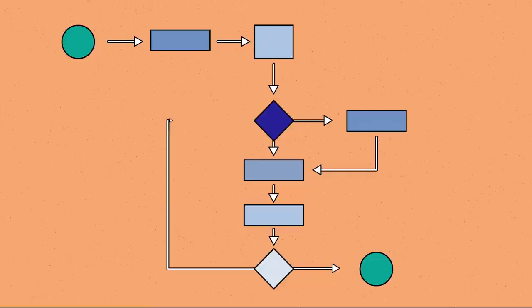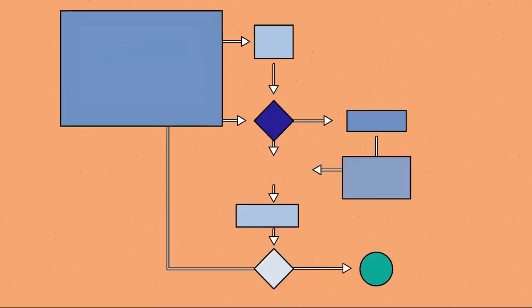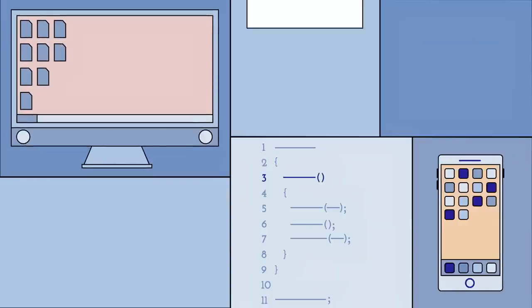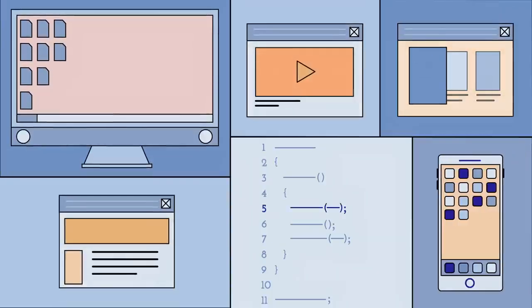Well, simply put, an algorithm is a set of steps used to complete a specific task. They're the building blocks for programming, and they allow things like computers, smartphones, and websites to function and make decisions.